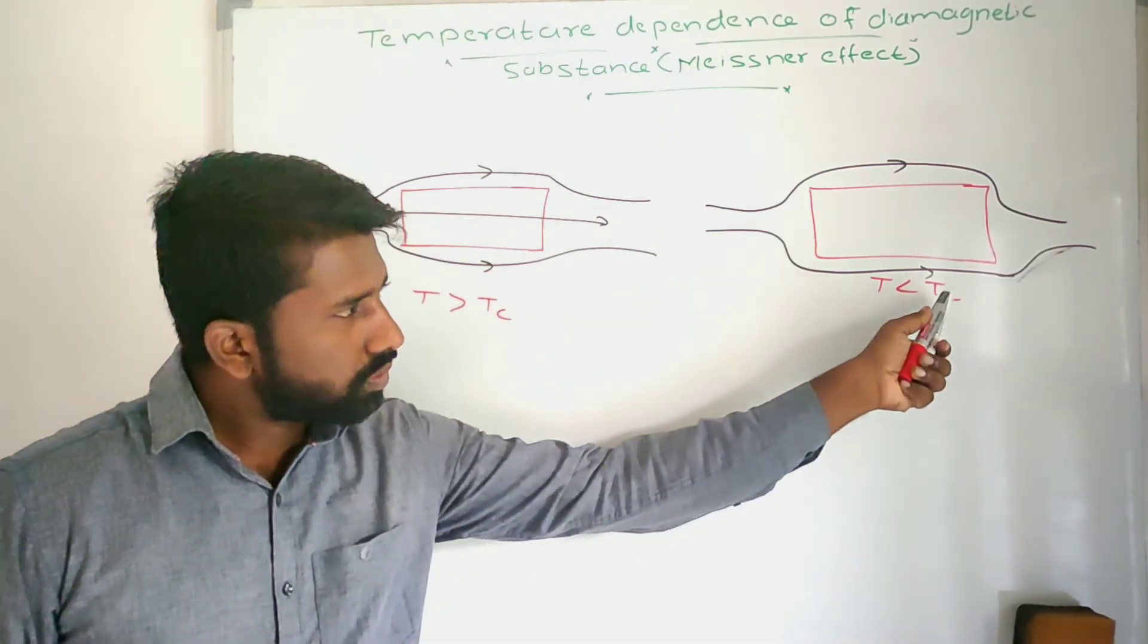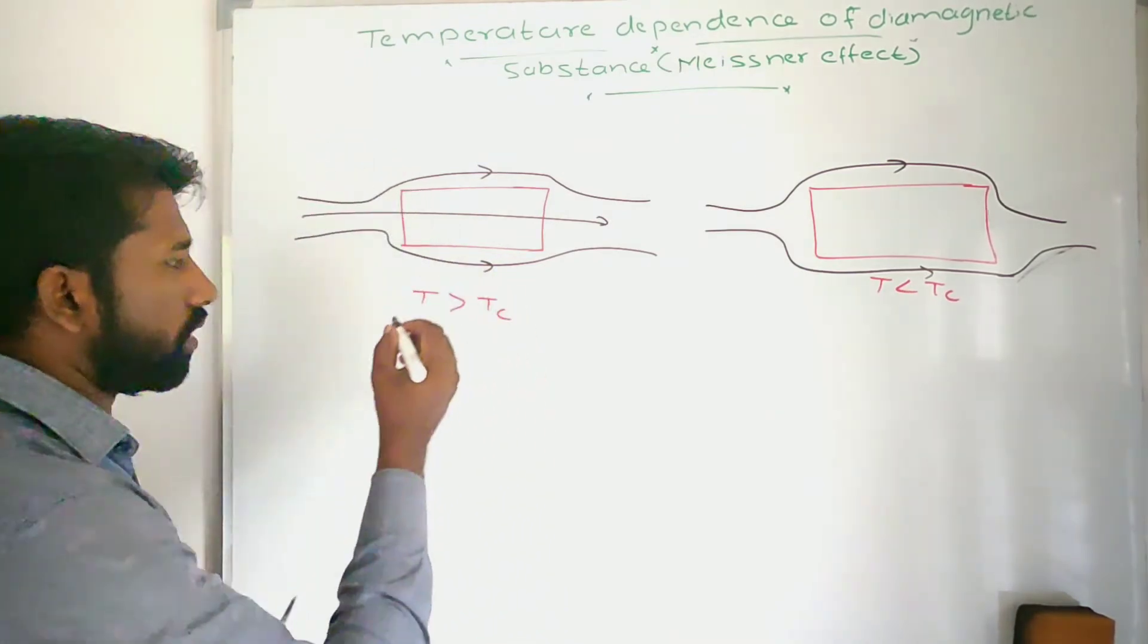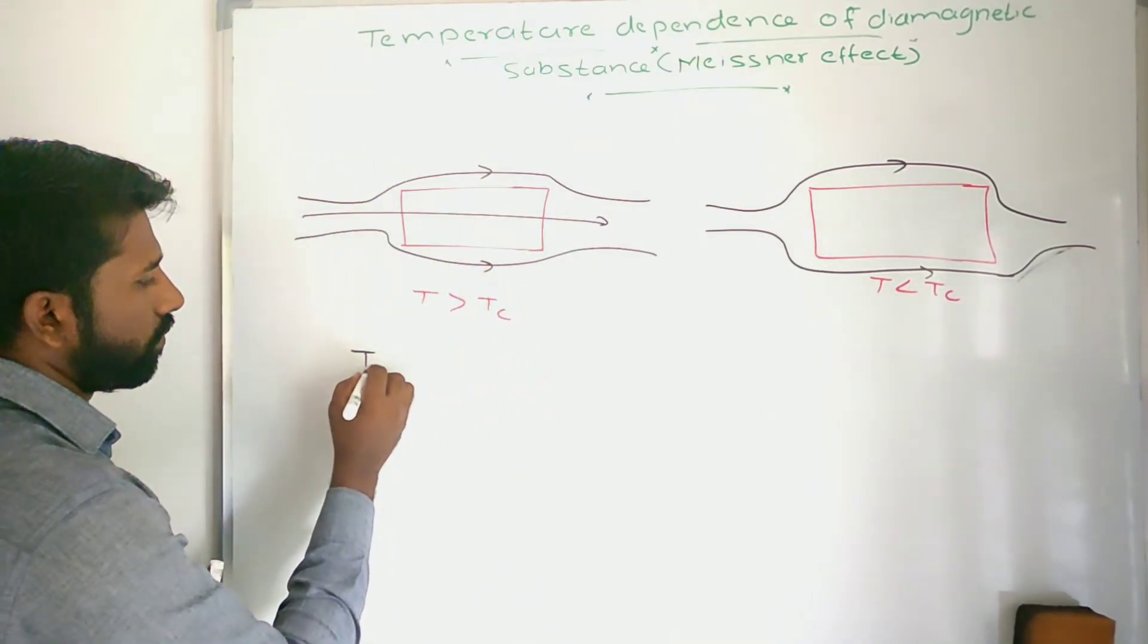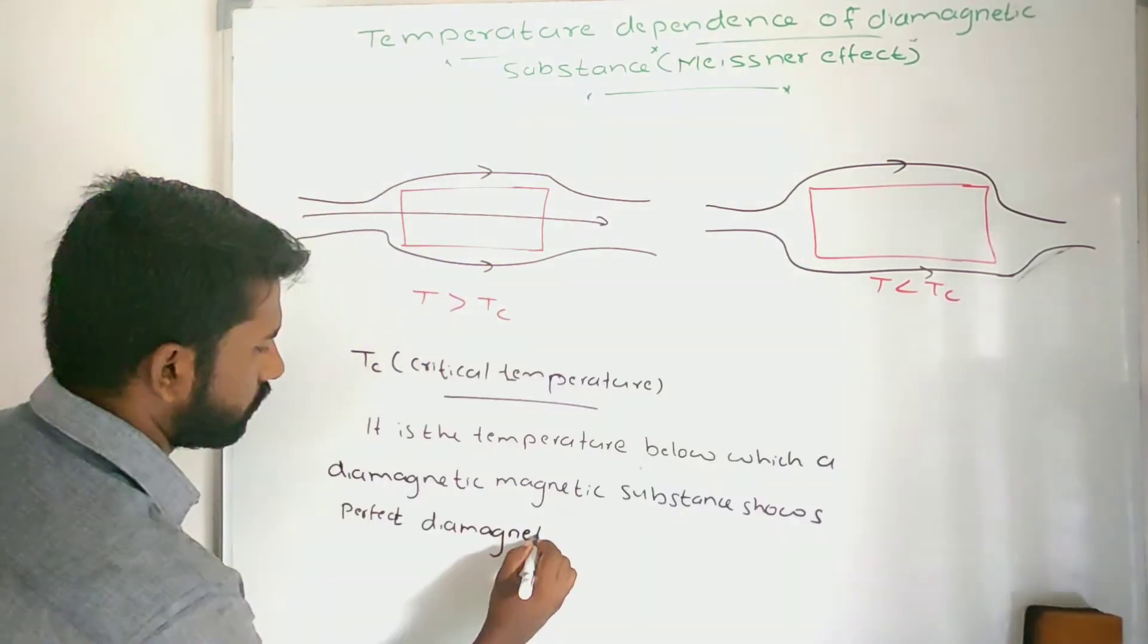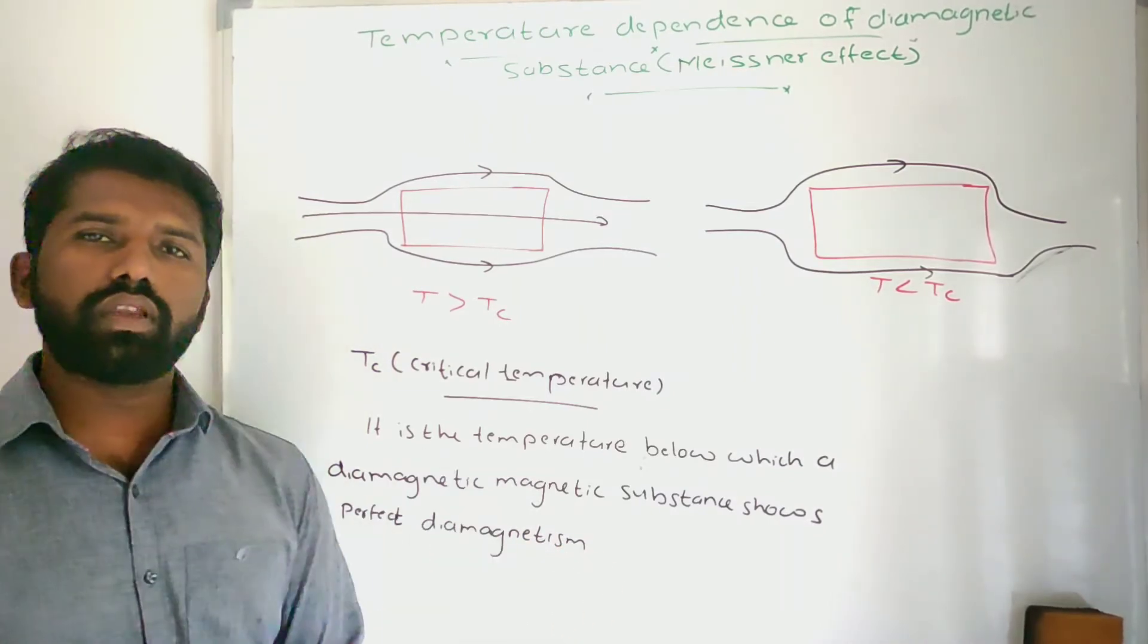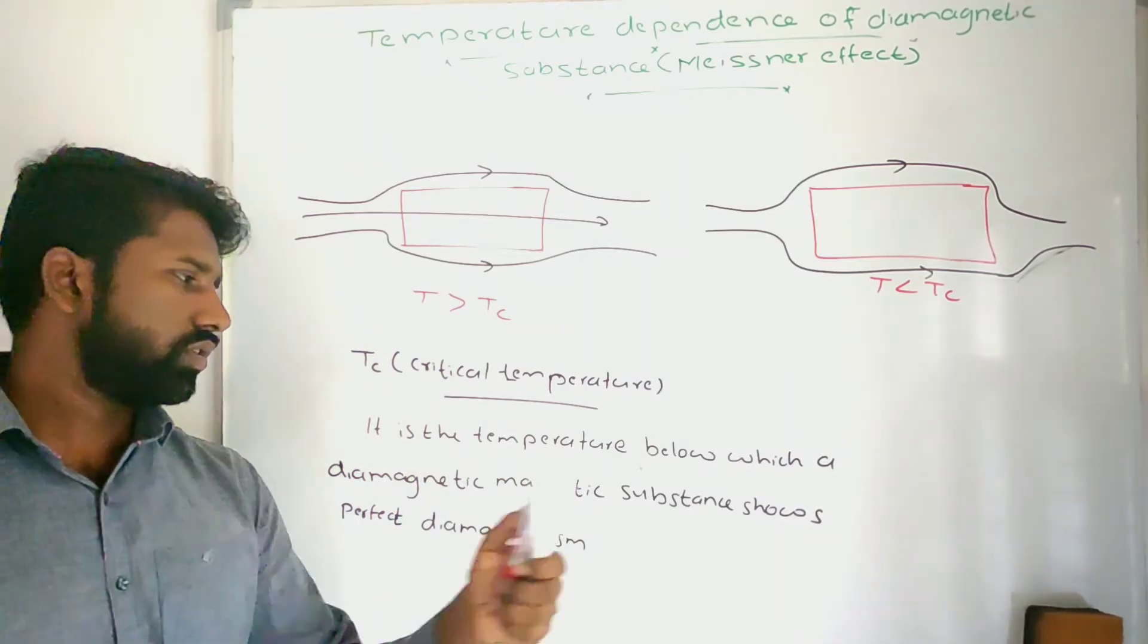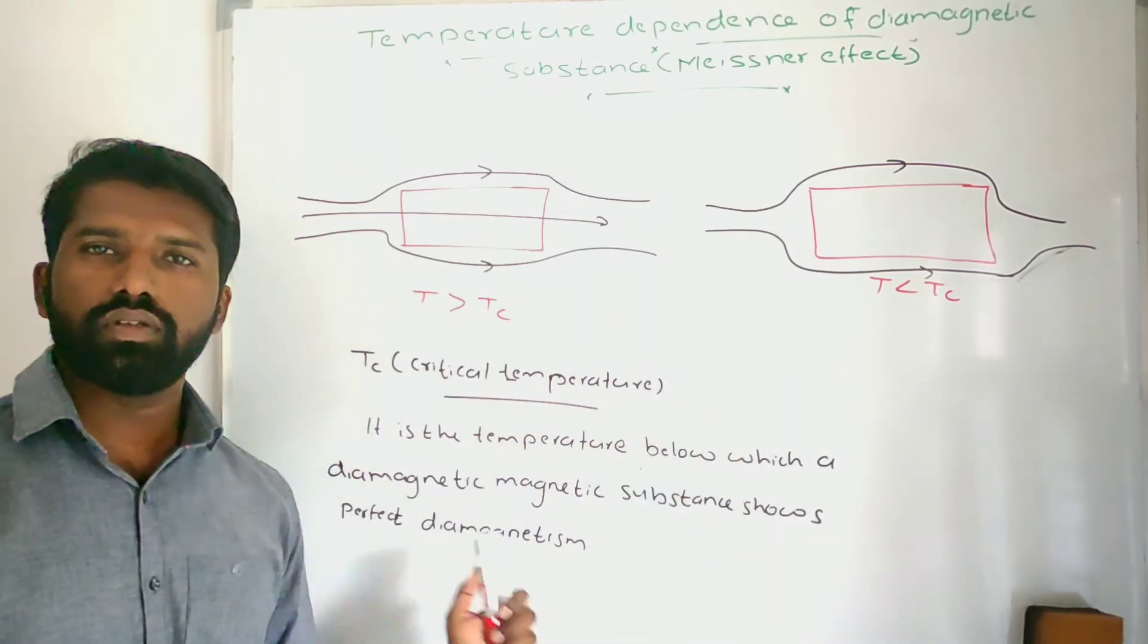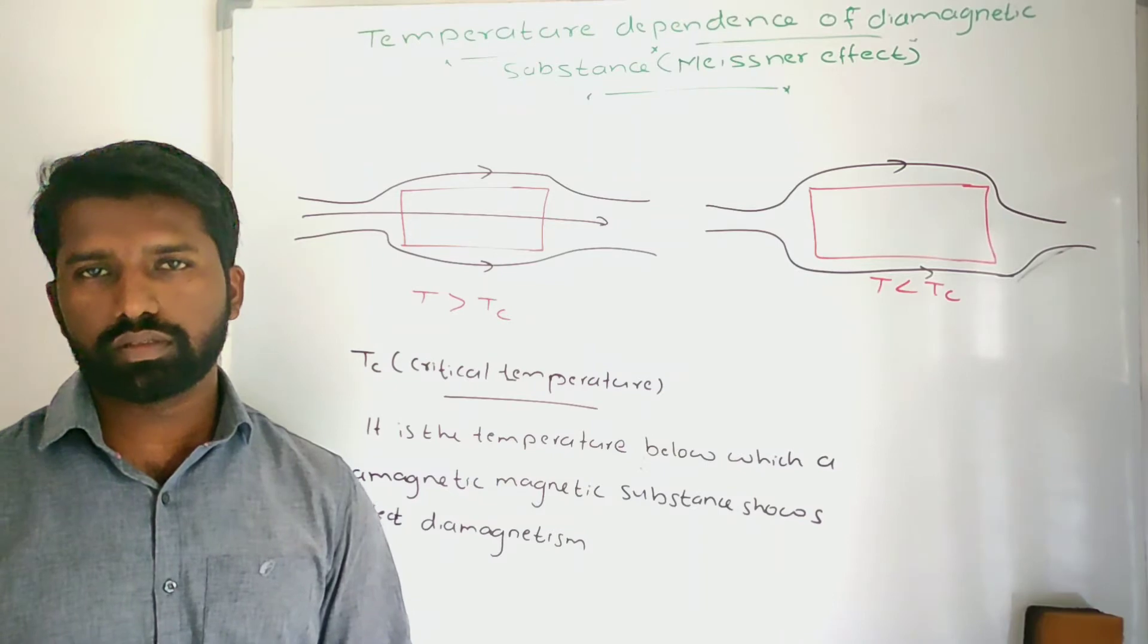So this temperature, Tc, is called the critical temperature. This is the temperature below which the substance shows perfect diamagnetism.